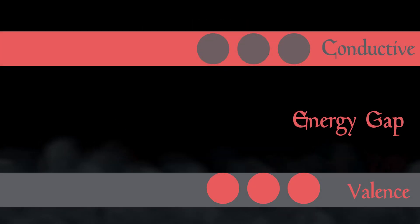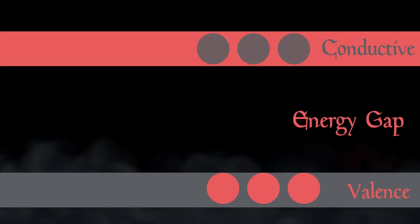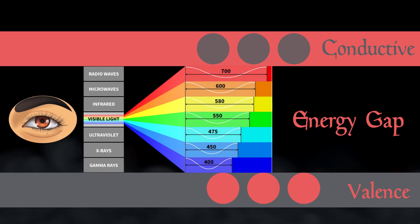You see, for a solid to be transparent, its energy gap needs to be larger than the energy in visible light. Indium oxide has an energy gap wide enough to be transparent.